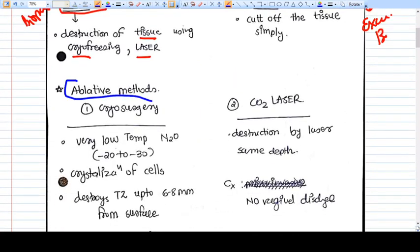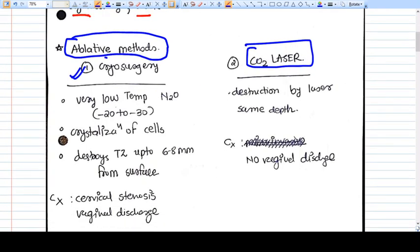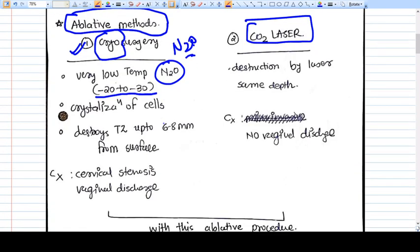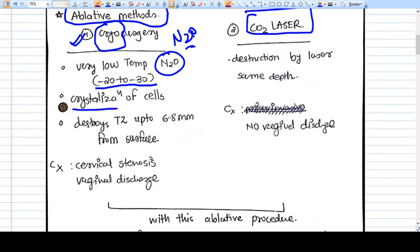Now let's discuss the ablative methods. The ablative methods are cryosurgery and CO2 laser. What is cryosurgery? The name cryo means very low temperature, at minus 20 to minus 30. This temperature can be achieved by N2O. It will crystallize the cells.